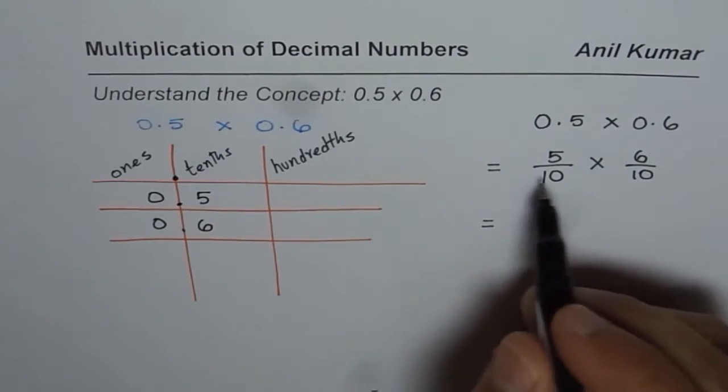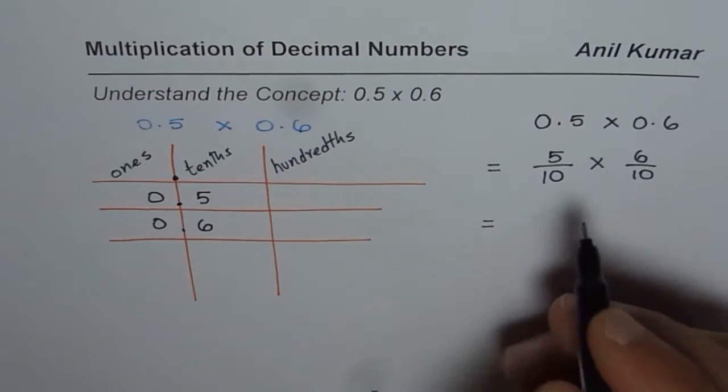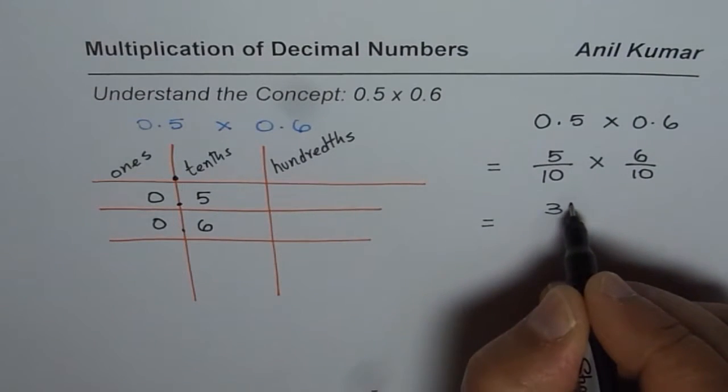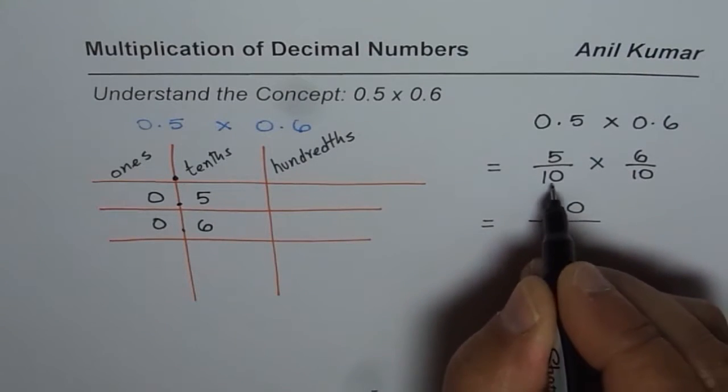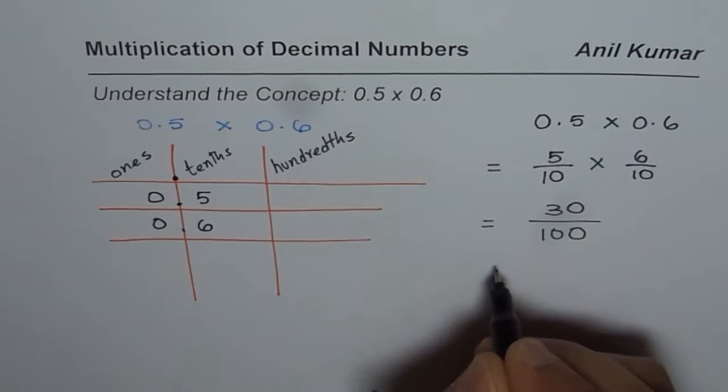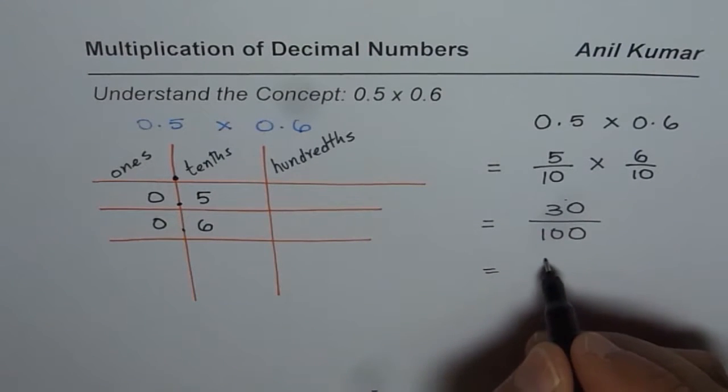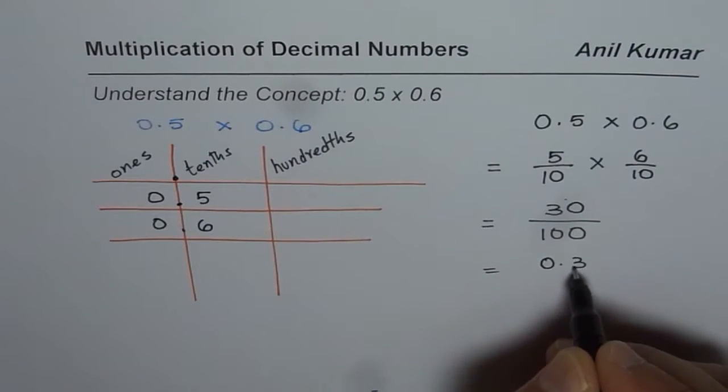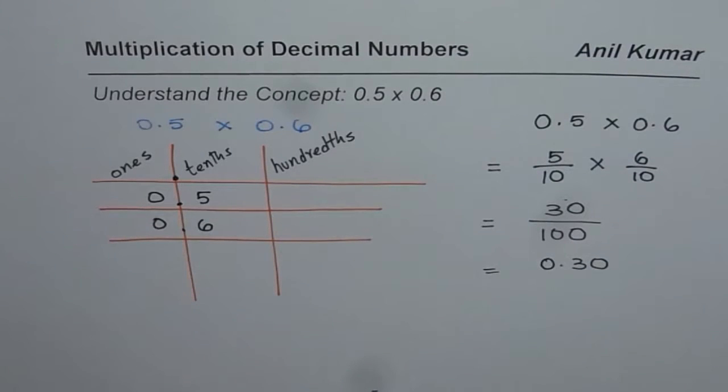Now you know how to multiply fractions. Multiply numerators we get 6 times 5 as 30 and then denominators 10 times 10 as 100. So if you divide 30 by 100 you get 0.30. So that is how you can actually multiply decimal numbers.